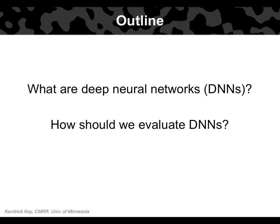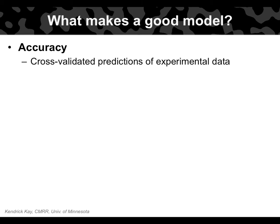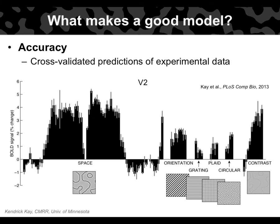In summary, DNNs are a sophisticated type of image processing model. We now ask: are they a good model of how the brain works? I think there are two main criteria we should use to evaluate a model. The first is accuracy — specifically how well a given model cross-validates and predicts experimental data. Here's a simple example: the black bars show responses of a single V2 voxel to a wide range of stimuli. We fit a model to 80% of the stimuli, predict responses for the left-out 20%, repeat five times, and the aggregated predictions match the data well.